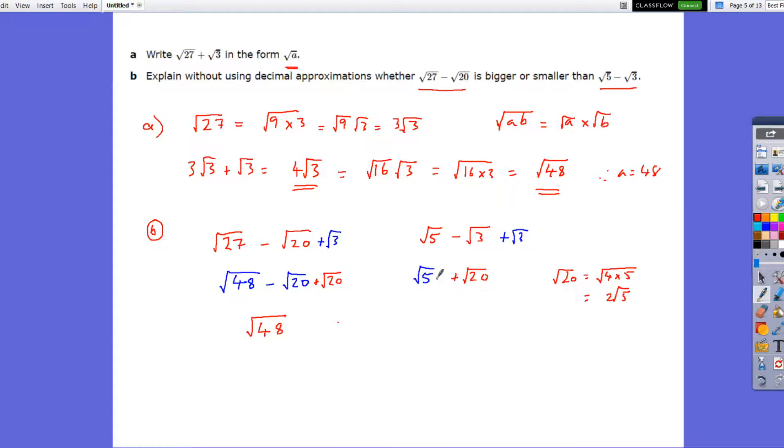Root 5. This will be, root 20 is the same as 2 root 5 plus root 5. So that gives me 2 here, 1 there, 3 root 5.